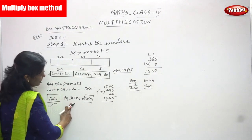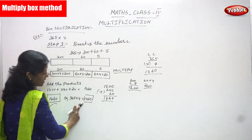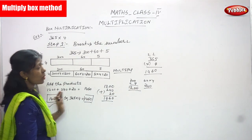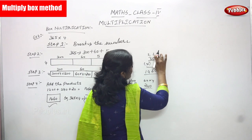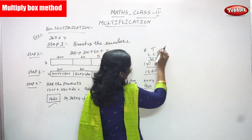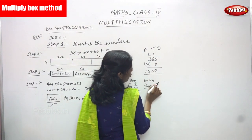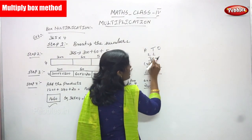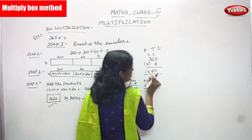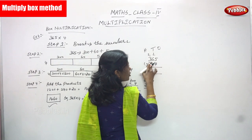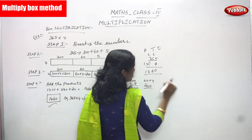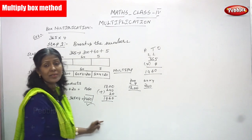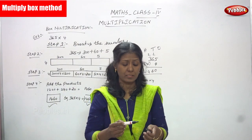This is the normal multiplication method without breaking. 365 into 4 — ones, tens, hundreds. Multiply by 4: five fours are twenty, write zero and carry two. Six fours are twenty-four, plus two is twenty-six, write six and carry two. Three fours are twelve, plus two is fourteen. So the answer is one thousand four hundred and sixty — the same answer as box multiplication. Both methods give 1460 as the correct answer.